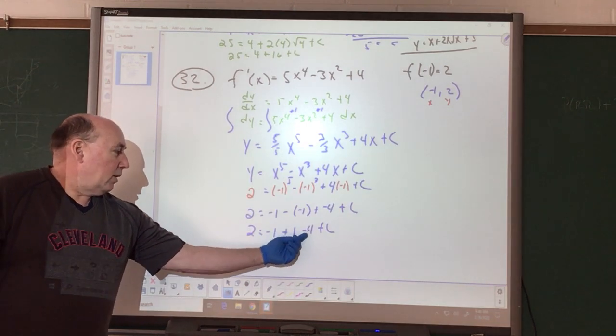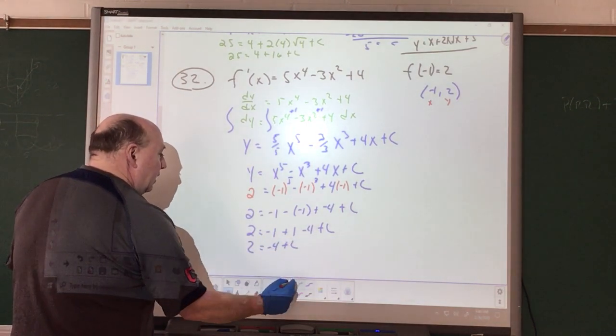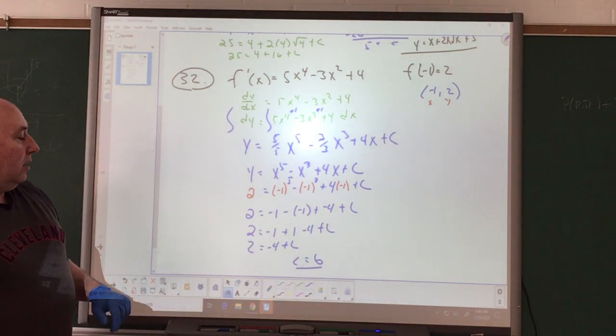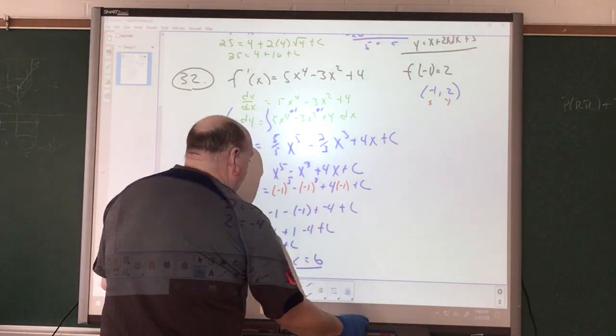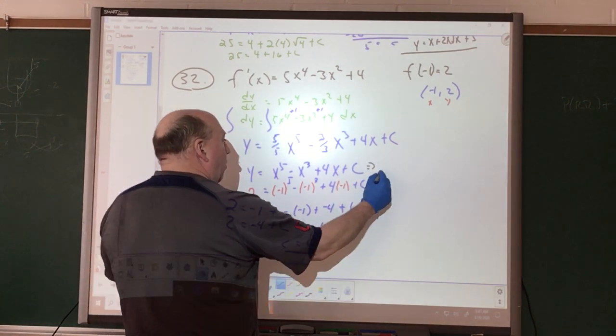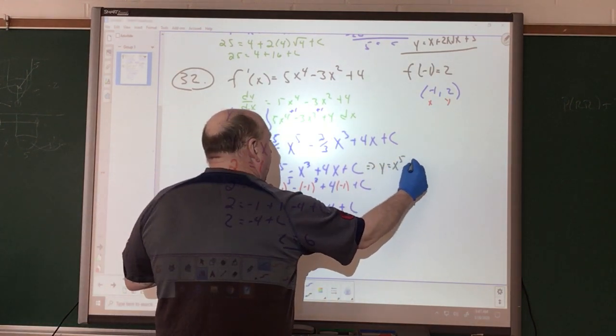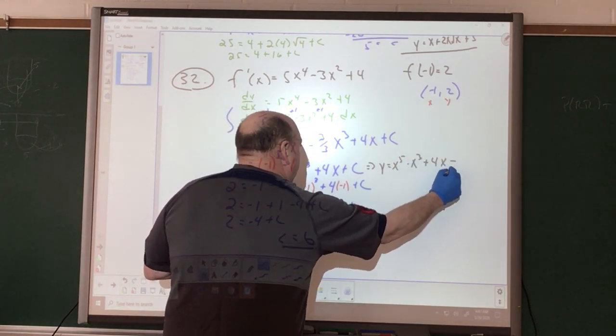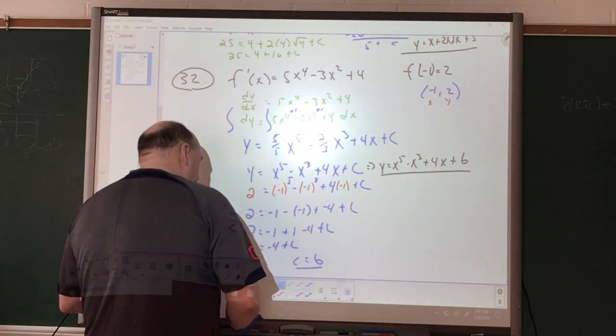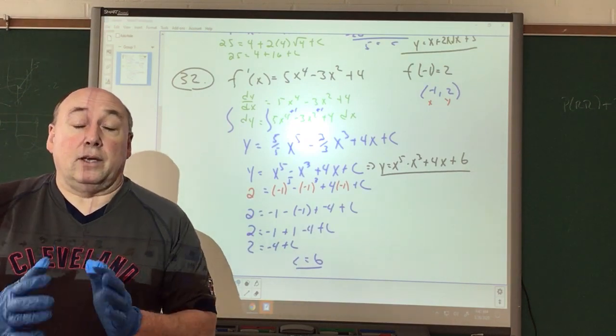C equals a value of 6, adding 4 to both sides. So my equation then, take it back to your equation. We have Y equals X to the 5th minus X cubed plus 4X plus our C value, which is a value of 6. Hopefully you got the same answer I did. Hopefully I didn't mess anything up. If you have any other questions, feel free to email me. Do please keep up with the material.